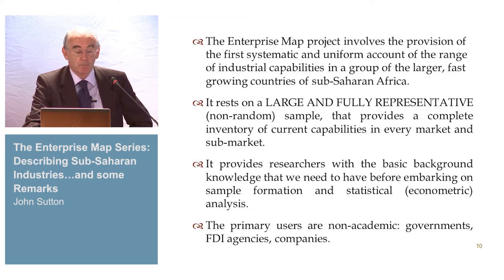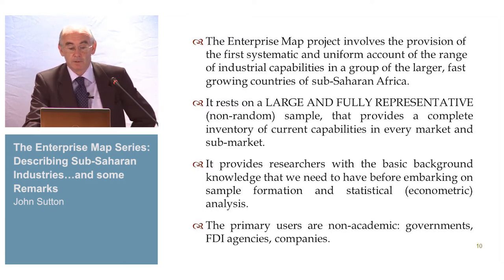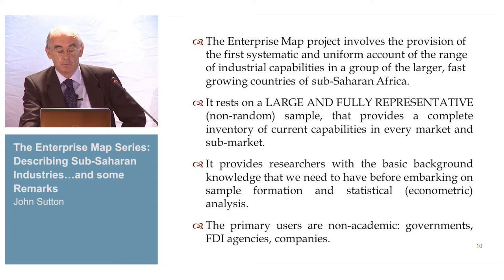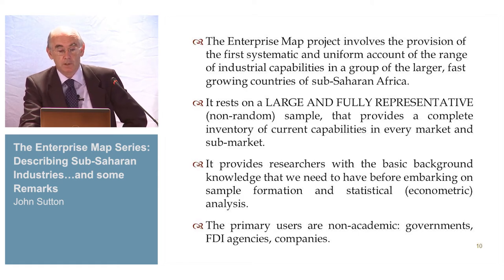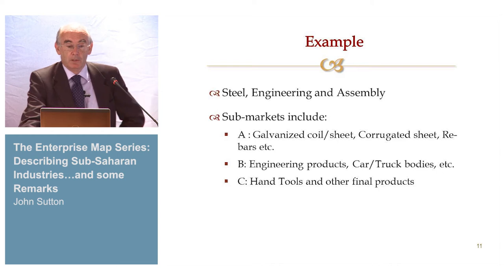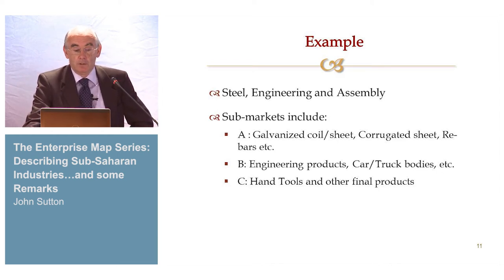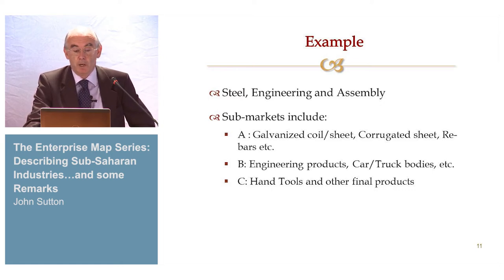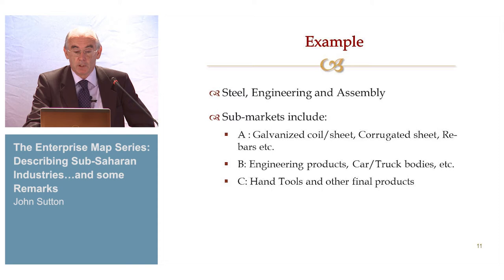The primary users of this book are actually non-academic — governments, FDI agencies, and companies — and it's proving very useful to governments in understanding what the pattern of firm activity is in the economy. For example, in the steel engineering and assembly area, the sub-markets in sub-Saharan Africa would include at least three groups of firms: one making galvanized coil, corrugated sheet, rebars, etc.; a second quite different group making cars and truck bodies; and many small firms making hand tools and other final products. In some countries there's a fourth sector doing something like aluminum or copper at the upper end.